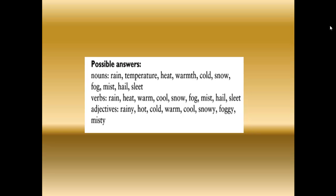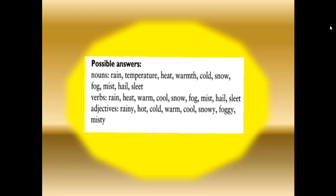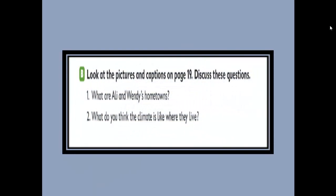Now after doing the first task, let's move to exercise number B. Look at the pictures and captions on page number 19 and discuss these questions: what are Ali and Wendy's hometowns? Here we want to look at the pictures and the captions, the notes under the pictures, and then discuss these questions.